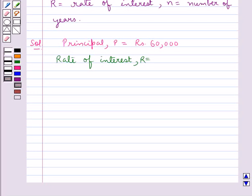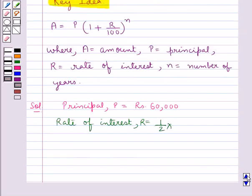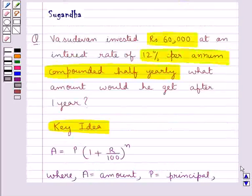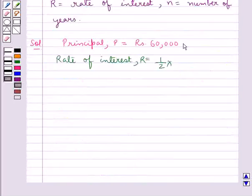So, in such situations, the half yearly rate will be half of the annual rate. So, the rate of interest R in this case would be half of the annual rate, that is 12%. So, half of 12% is equal to 6% half yearly.